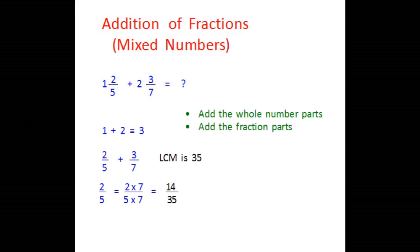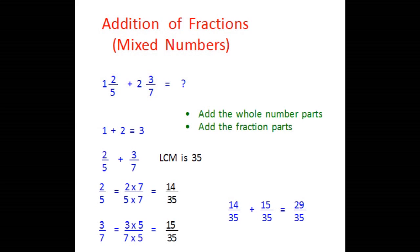The equivalent fraction for 2 over 5 will be 14 over 35, since we want to make 35 the denominator. The equivalent fraction for 3 over 7 comes out to be 15 over 35. So now these two are like fractions: 14 over 35 and 15 over 35. Add 14 and 15 — the answer is 29, so the addition becomes 29 over 35.